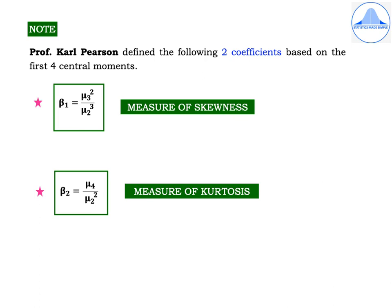Professor Karl Pearson defined two coefficients based on the first four central moments. The first is β1 = μ3² / μ2³, which is a measure of skewness. The second is β2 = μ4 / μ2², which is a measure of kurtosis. You will also use β1 and β2 in the second PUC chapter on theoretical distributions, especially under the normal distribution.